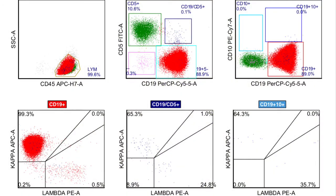This shows the basic flow panel that was run. The top left-hand panel, CD45 by side scatter, shows a fairly homogeneous population of lymphocytes. Moving to the right on the top row, you can see we have colored the B-cells detected by CD19 in red and the T-cells CD5 in green. There is a significant shift towards B-cells, with about 90% of the lymphocytes being CD19-positive B-cells and about 10% being CD5-positive T-cells.